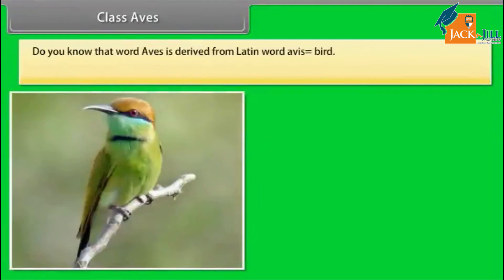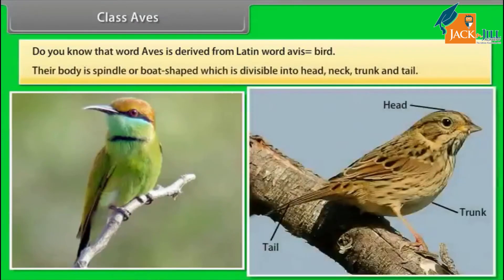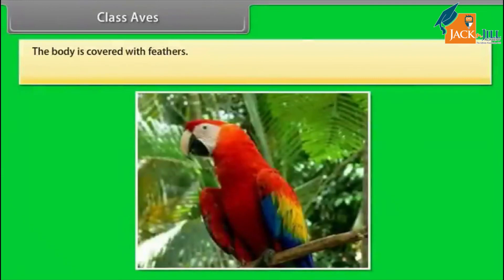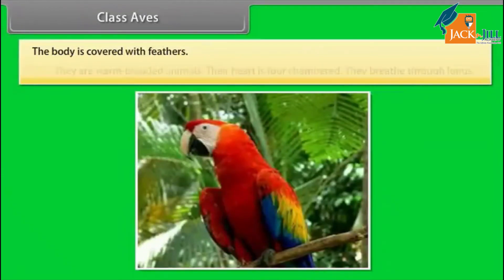Class Aves. The word Aves is derived from Latin word avis, meaning bird. Their body is spindle or boat-shaped, divisible into head, neck, trunk, and tail. The body is covered with feathers. They are warm-blooded animals. Their heart is four-chambered. They breathe through lungs.